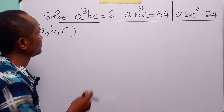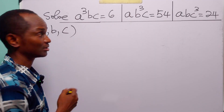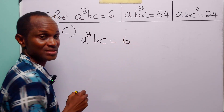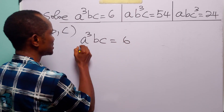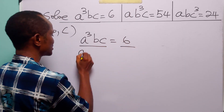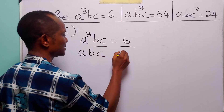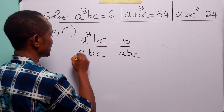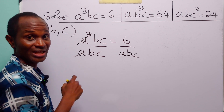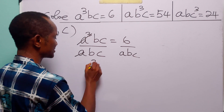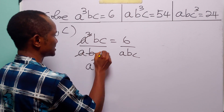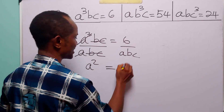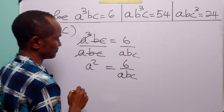To solve this problem, let us look at this first equation. We have A cubed times B times C is equal to 6. Notice that if we divide both sides of this equation by A times B times C, on the left hand side this is going to leave us with A squared, and on the right hand side we have 6 over A times B times C.